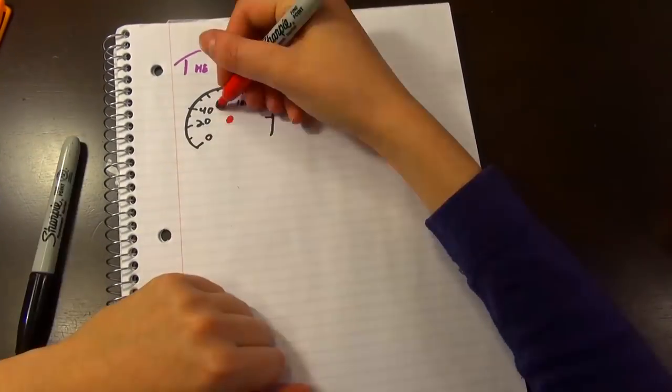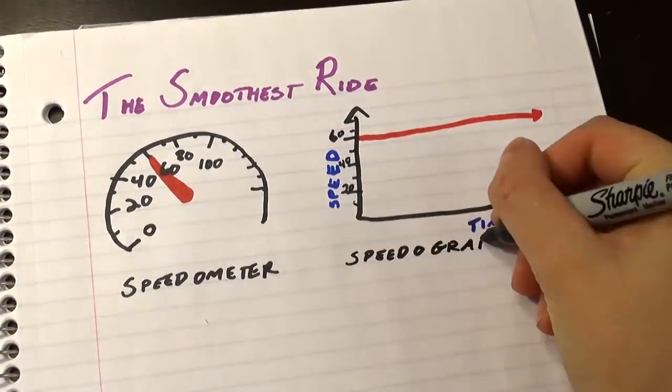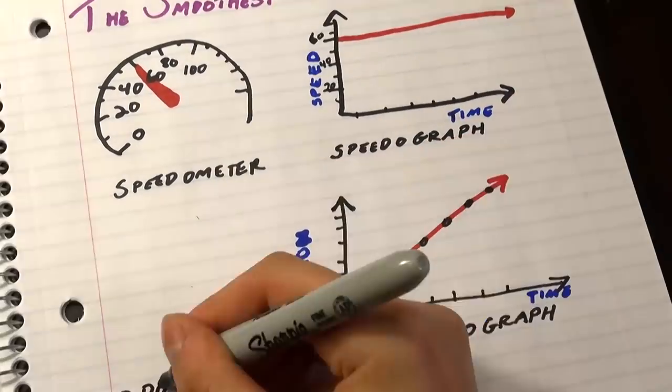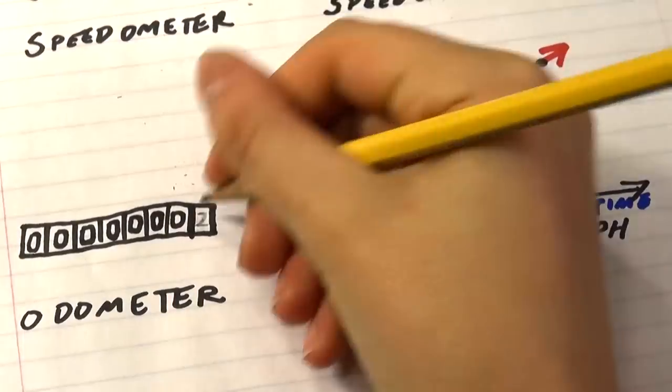Everyone knows the smoothest ride is one where you're just cruising along at a fixed speed. There's no action in the speedometer. The only movement is in your position, which changes every second and moves the same amount forward every second.